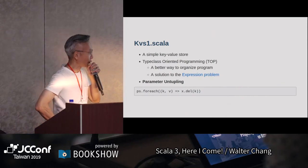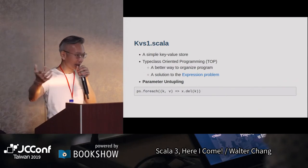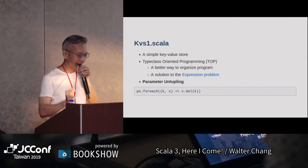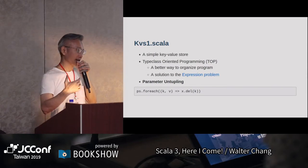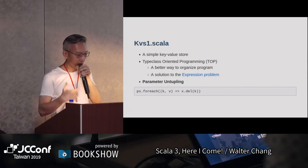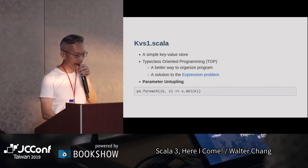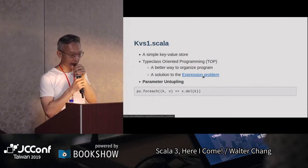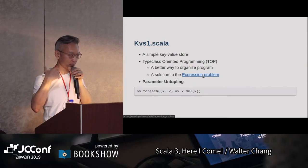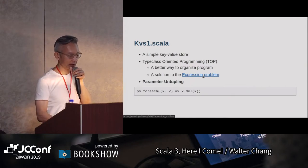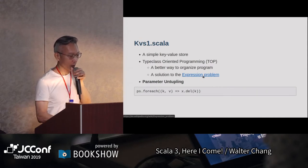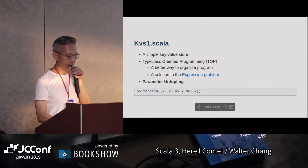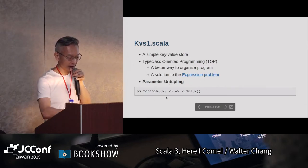這裡所謂的type class-oriented programming，我們過去有object-oriented programming，現在有type class-oriented programming。我覺得這是一個比OOP更好來organize你的program的方法，而且它基本上也是一個solution to所謂的expression problem。如果大家可以看一下什麼叫做expression problem，那就是我們過去在做OOP的時候比較難解決的地方，用type class的話可以蠻簡單的來解決這個問題。這裡面我們會提到partial type parameter，在看程式的時候再來解釋。